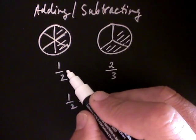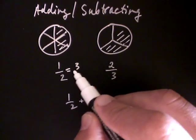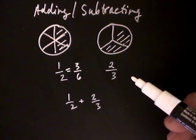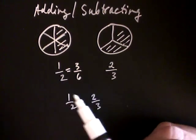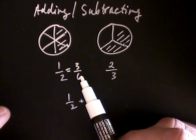So, we see that one half is the same thing as three sixths. Kind of an amazing property of fractions, that you can represent the same quantity in two different ways. So, one half is the same as three sixths.